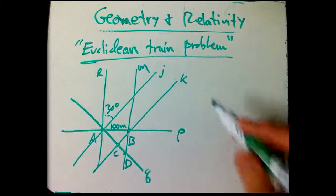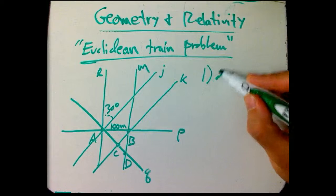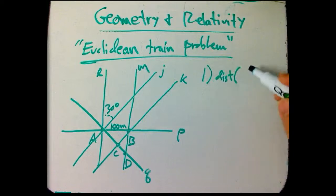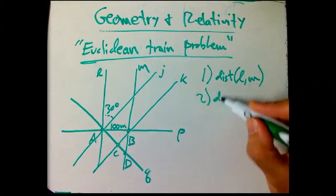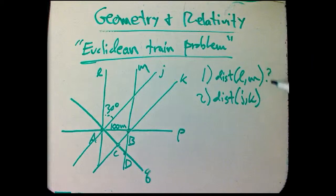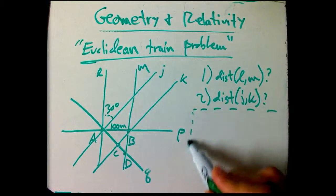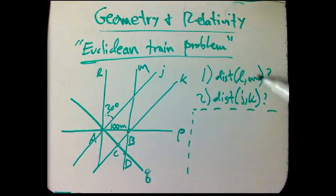So here's two natural questions. What is the distance between lines L and M? And similarly, what is the distance between lines J and K? Now, this one, hopefully, seems really easy. And this one seems like it shouldn't be too hard. But I'm going to show you how, if you are really perverse, you might come up with wrong answers to both of those questions.